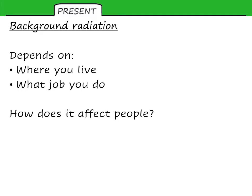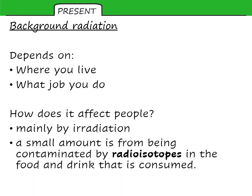Most of background radiation's effect on us is irradiation — the source emitting alpha, beta, and gamma. A small amount is due to contamination by radioisotopes in our food and drink. Bananas are a good example: they contain a tiny amount of a radioactive isotope of potassium. You would literally have to eat a million bananas to be at any kind of risk, and a million bananas would kill you from other causes far before radiation would.